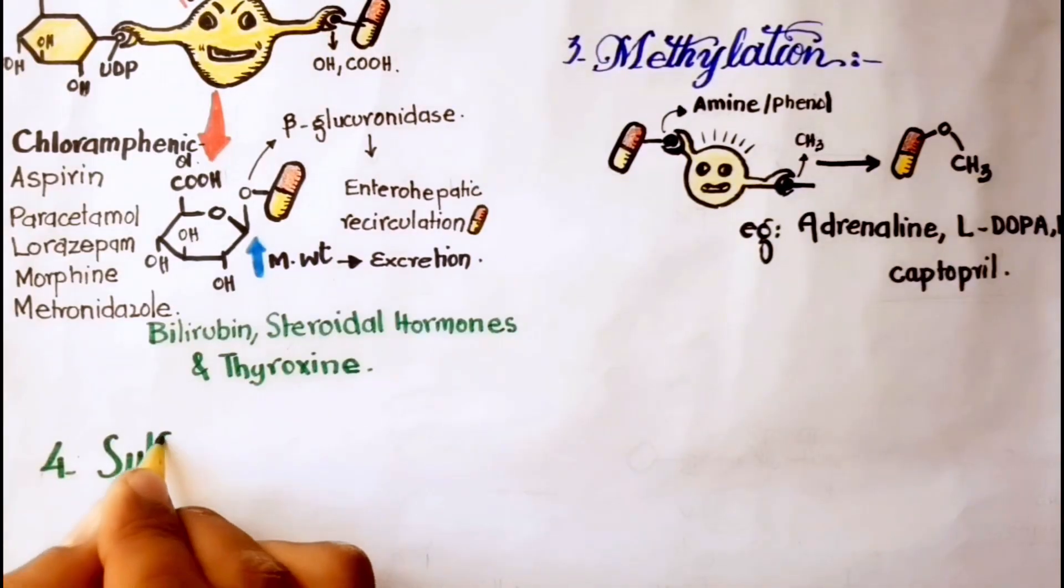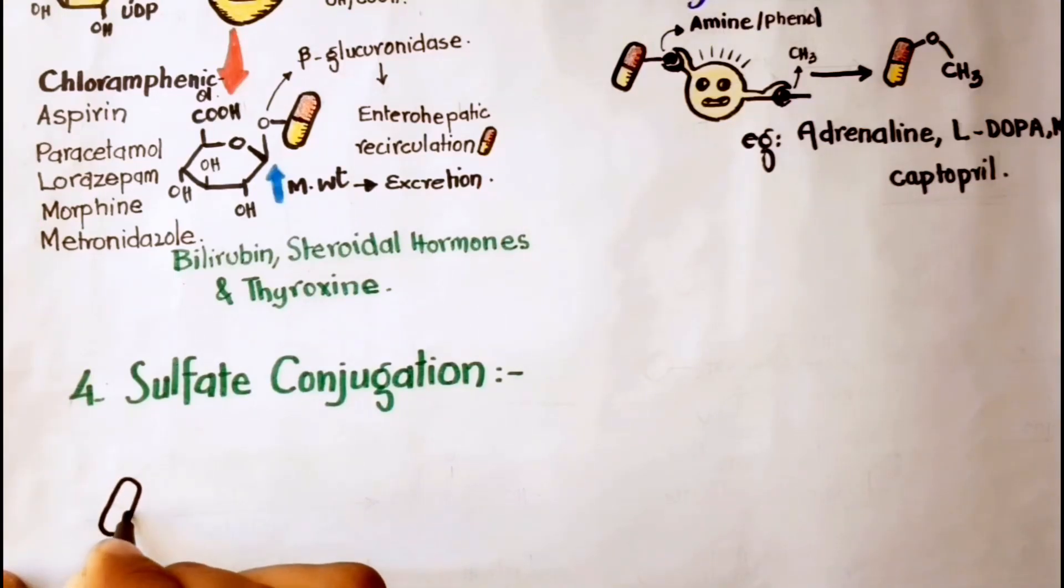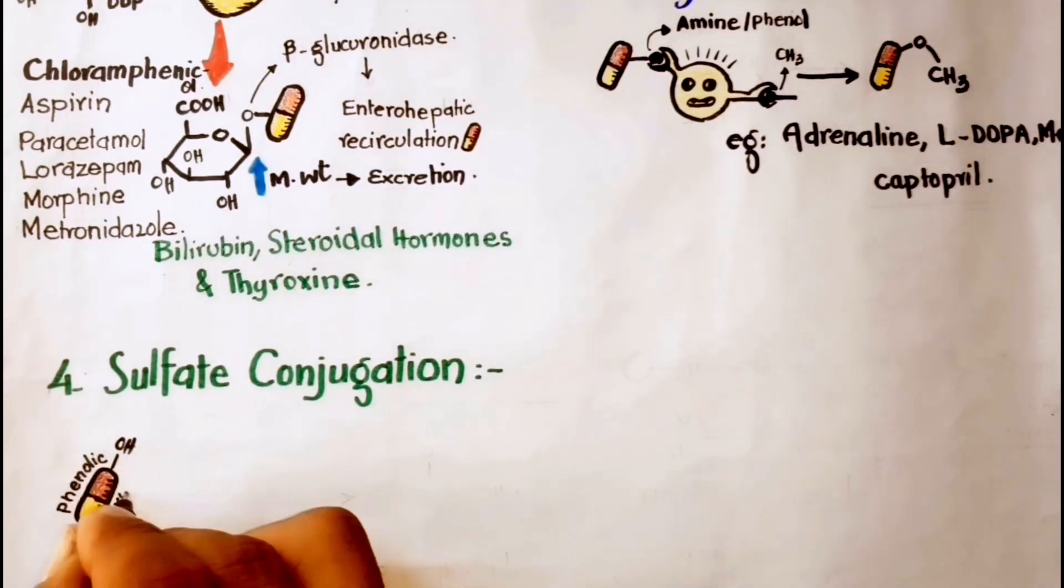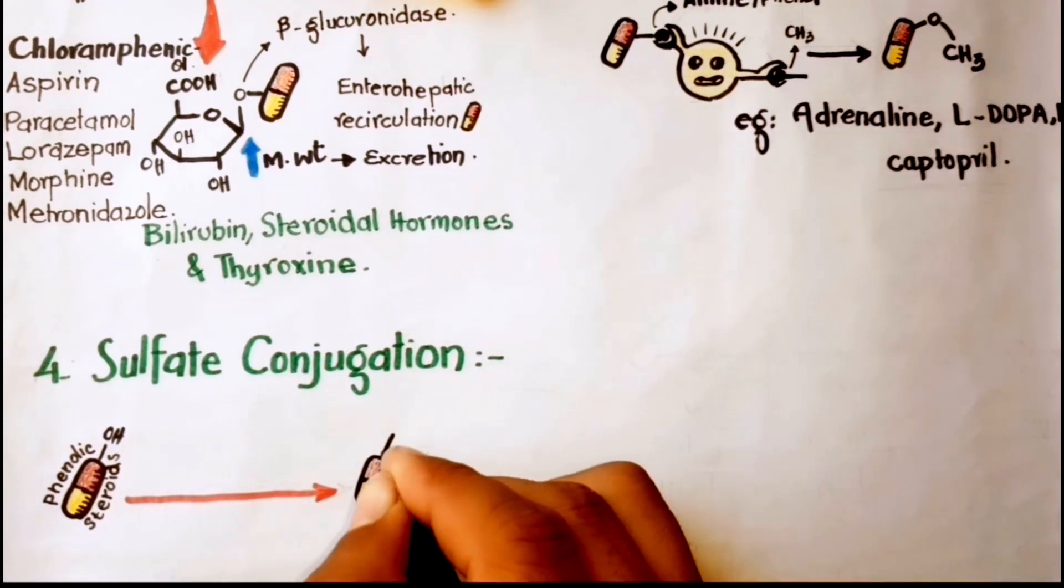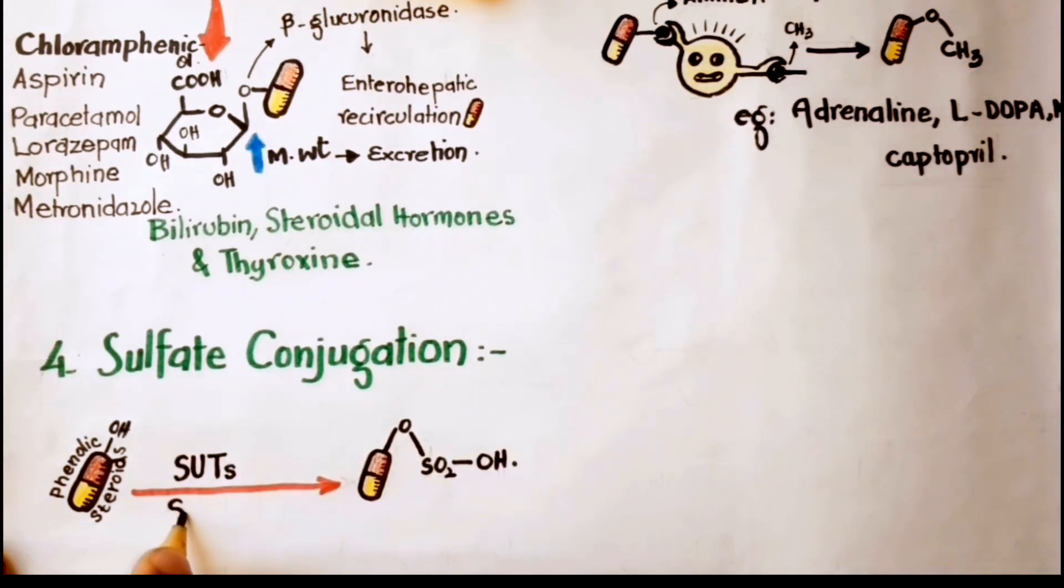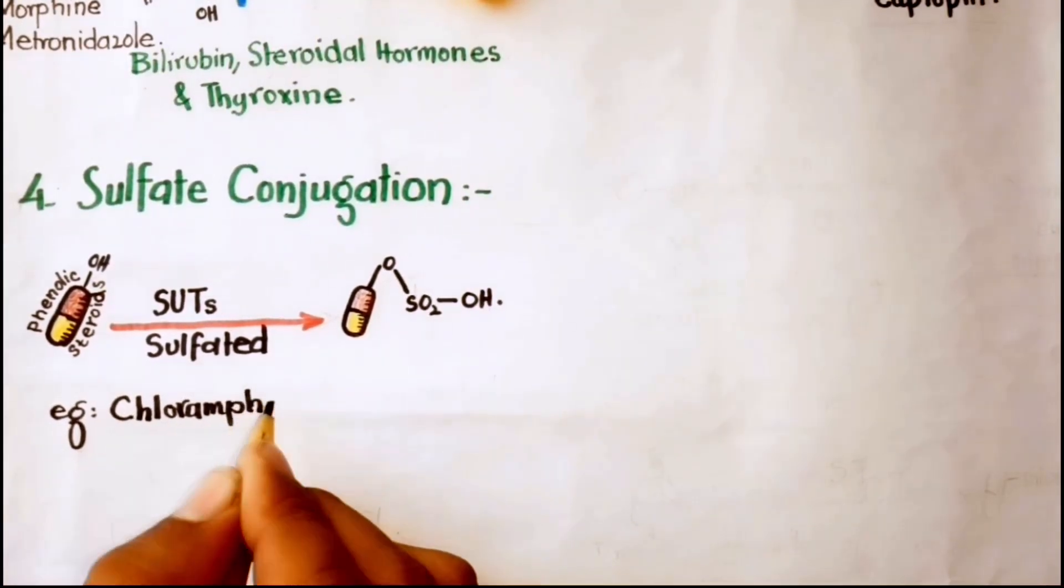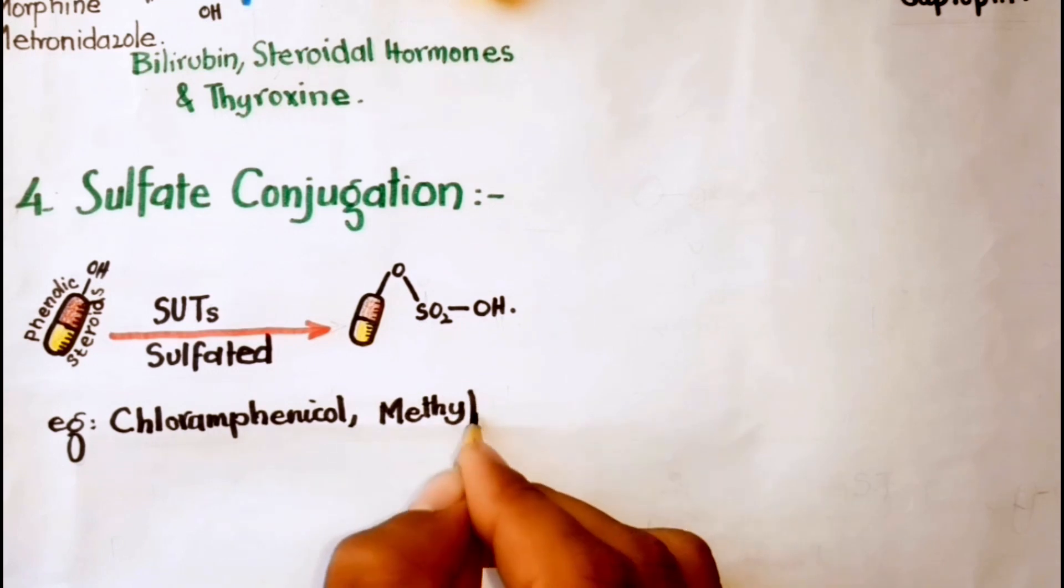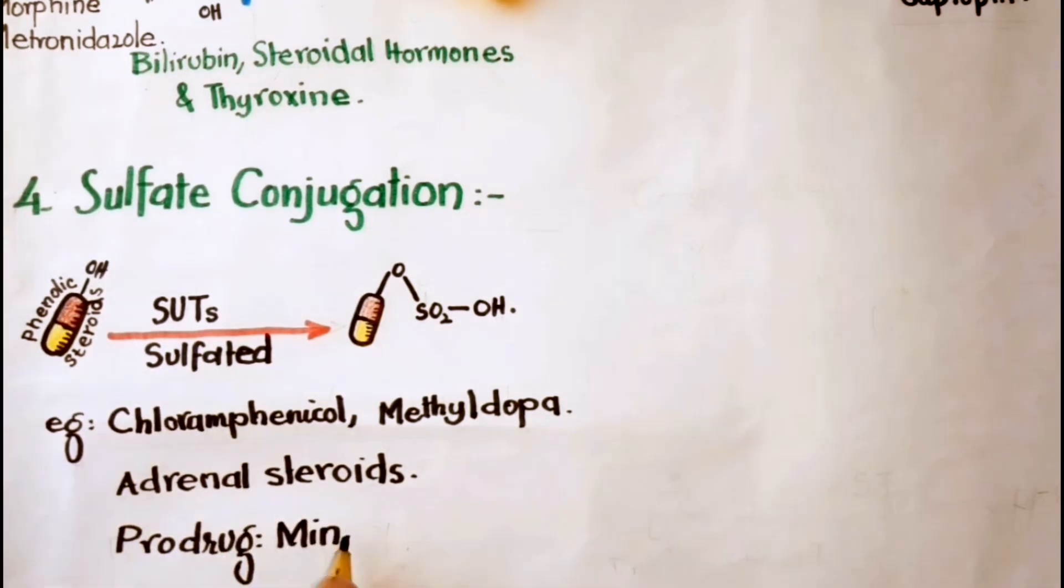Another type is sulfate conjugation. The phenolic drugs and steroids are sulfated by sulfotransferases located in the cytosol. For example, chloramphenicol, methyldopa, and adrenal steroids. Furthermore, sulfation is known to activate the orally active prodrug minoxidil into a very efficacious vasodilator.